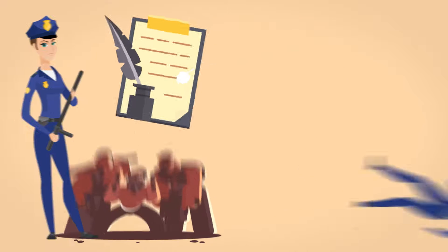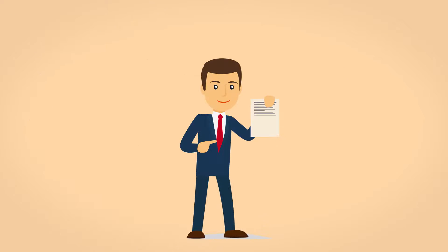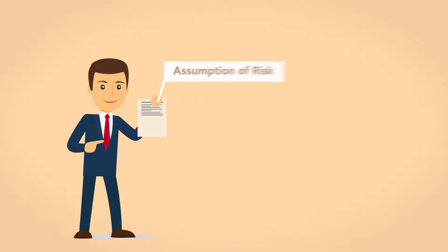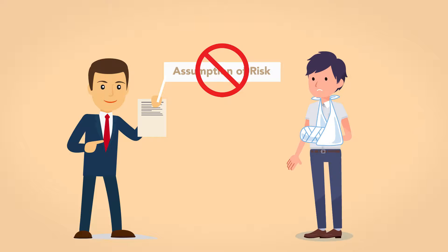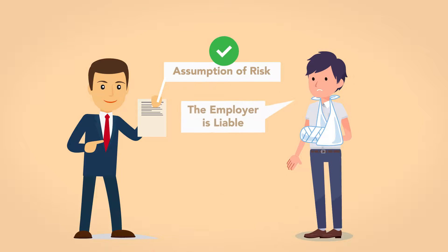Finally, as with Contributory Negligence, an employer cannot assert an Assumption of the Risk defense against employees. The doctrine can only be asserted against the injured party that is seeking to hold an employer or individual vicariously liable.